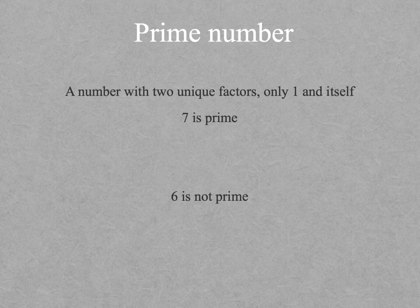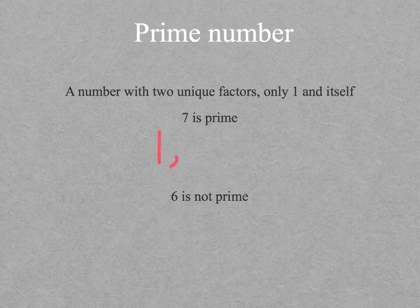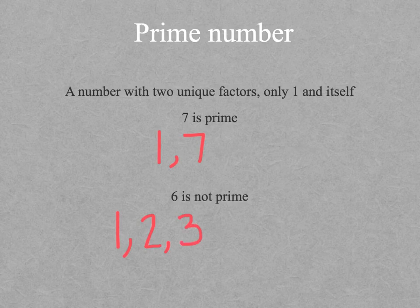And finally, prime numbers. It's a number with two unique factors, only one and itself. The only two digits that equal 7 when you multiply is 1 and 7. No other digits will equal 7. 6, though, is not prime because 1, 2, 3, and 6 are all factors of 6.